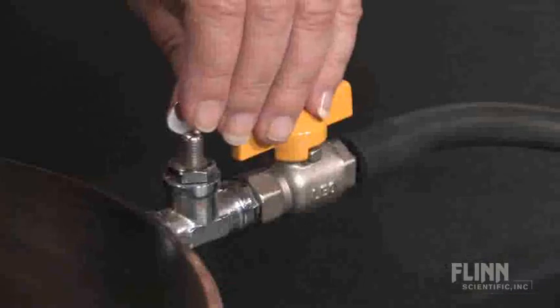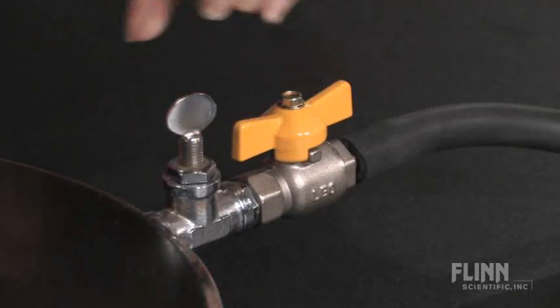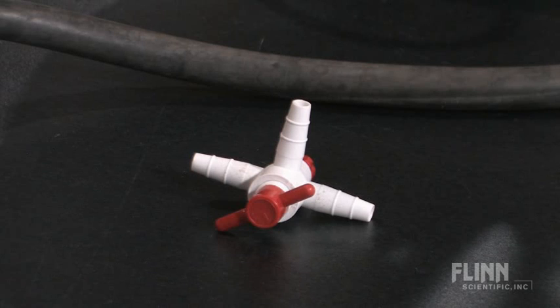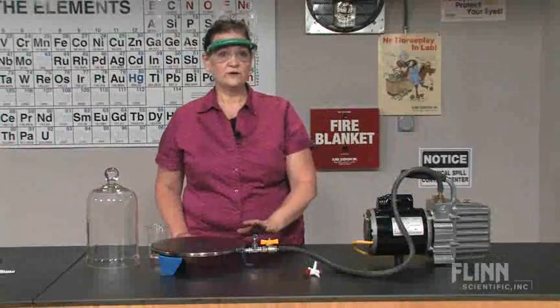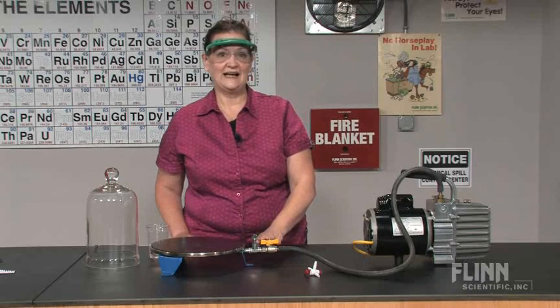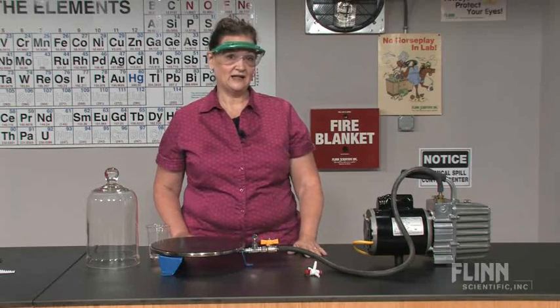You need to have a way to vent the system, and this vacuum plate has a valve for that. If you don't, you may need to use a three-way valve and use two pieces of tubing. Before you turn a pump off when it's running under vacuum, you must vent it to the atmosphere, otherwise the oil may back up in the chamber.